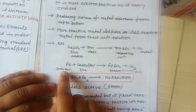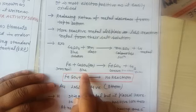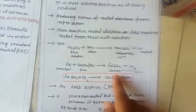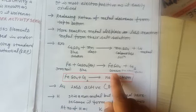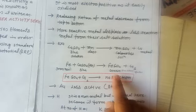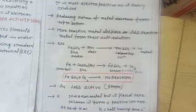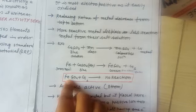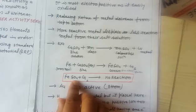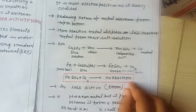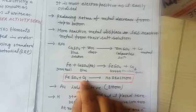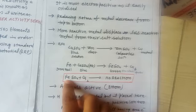Similarly, when iron nails are added to the blue solution of copper sulphate, it becomes green in colour because iron is more reactive compared to copper. Iron displaces copper from its salt solution.